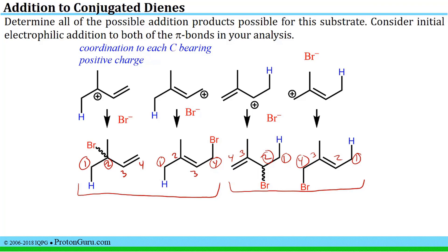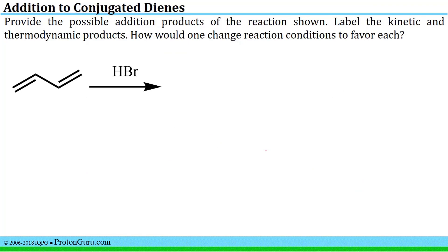Another important concept coming out of our discussion of conjugated dienes is the concept of kinetic versus thermodynamic products. Here we are asked to draw the possible addition products for 1,3-butadiene and then to label the kinetic and thermodynamic products.